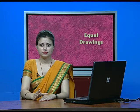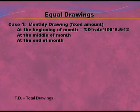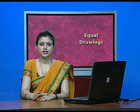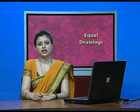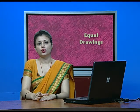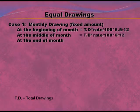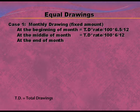The second sub-case is at the middle of the month. Drawings are made on the 15th of January, 15th of February, 15th of March, and so on up to December. The formula is: Total Drawing × Rate/100 × 6/12, where 6/12 is the average period.